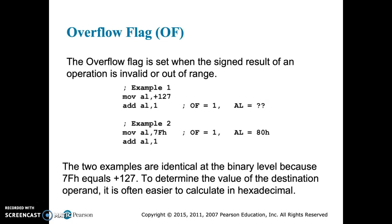Second example is the same, except it's hexadecimal. So we move 7Fh to our AL register, and then we add 1, and that's our problem with overflow.